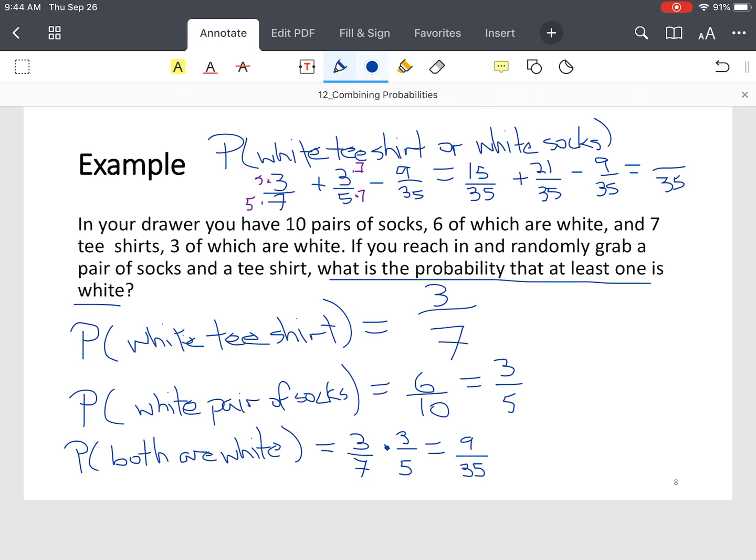Now, stop there. If we wouldn't have subtracted out this overlap, we would have potentially had 36 over 35, which means our probability is greater than 1, which would be incorrect. So we know 36 minus 9, which is 27.